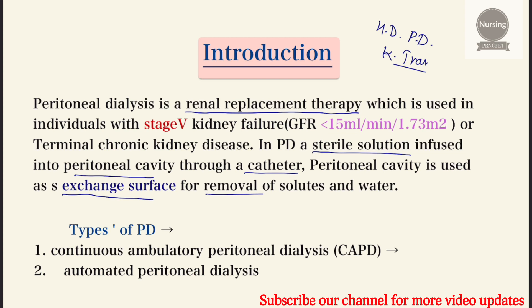There are many types of catheters used in PD, but mostly there are two types: one is a flexible catheter and the other is a rigid catheter. Flexible catheters are mostly used, and rigid catheters are mostly used in acute PD.